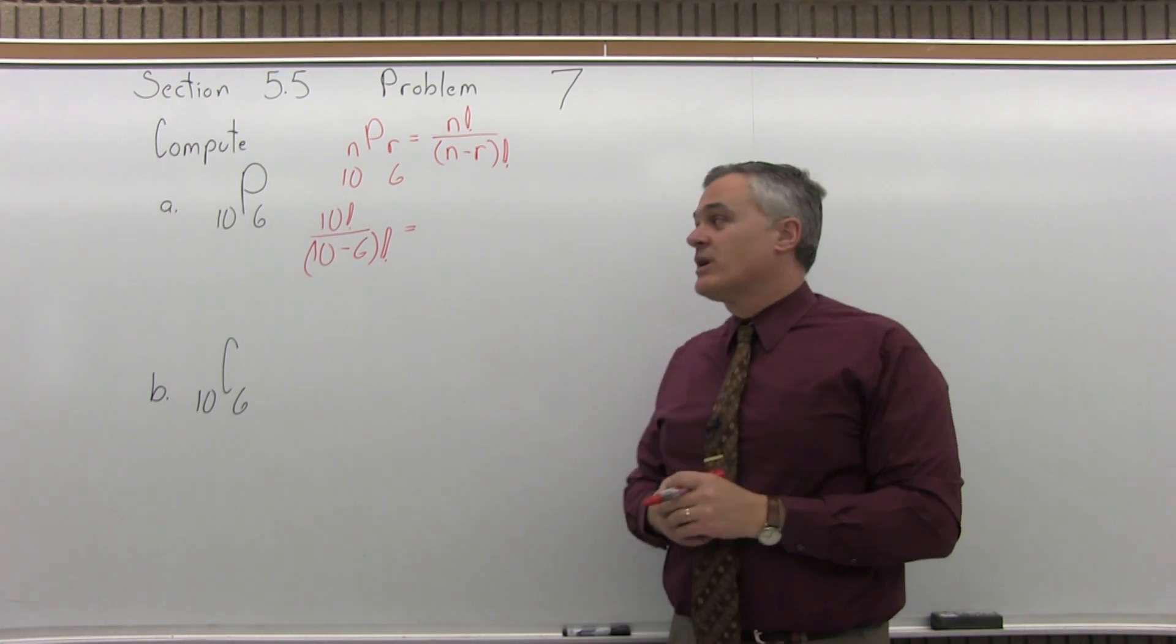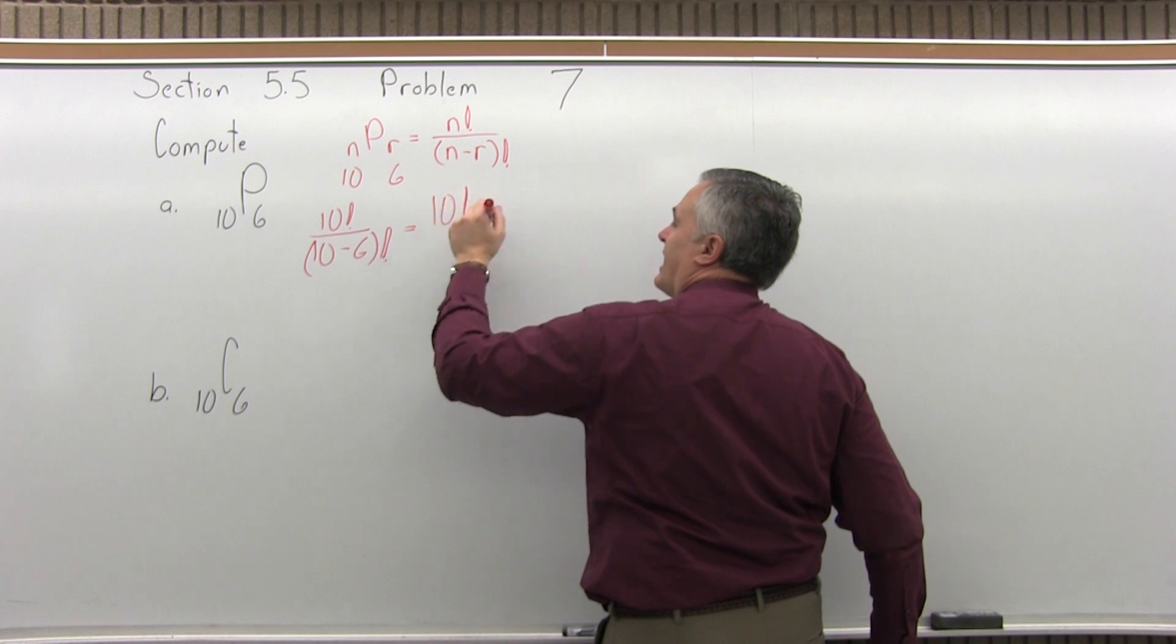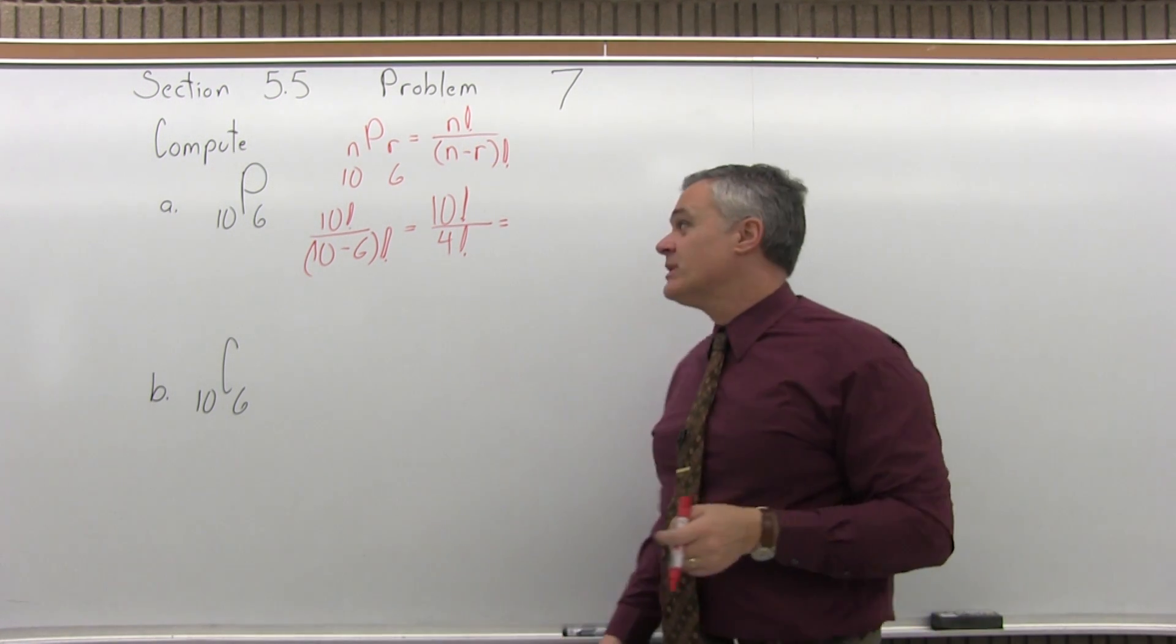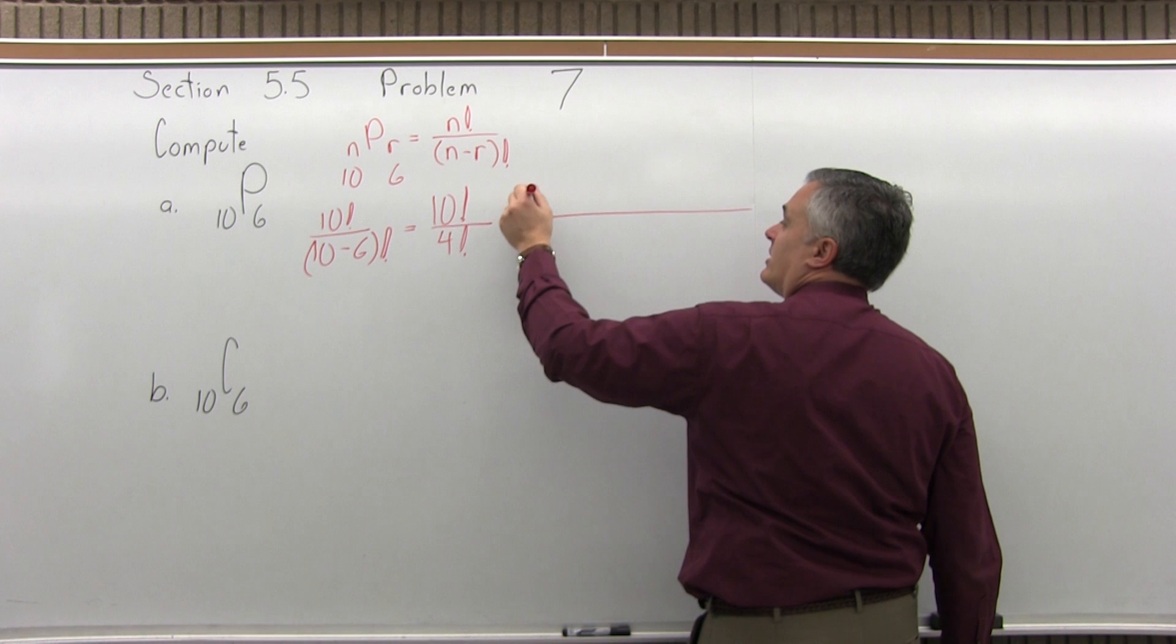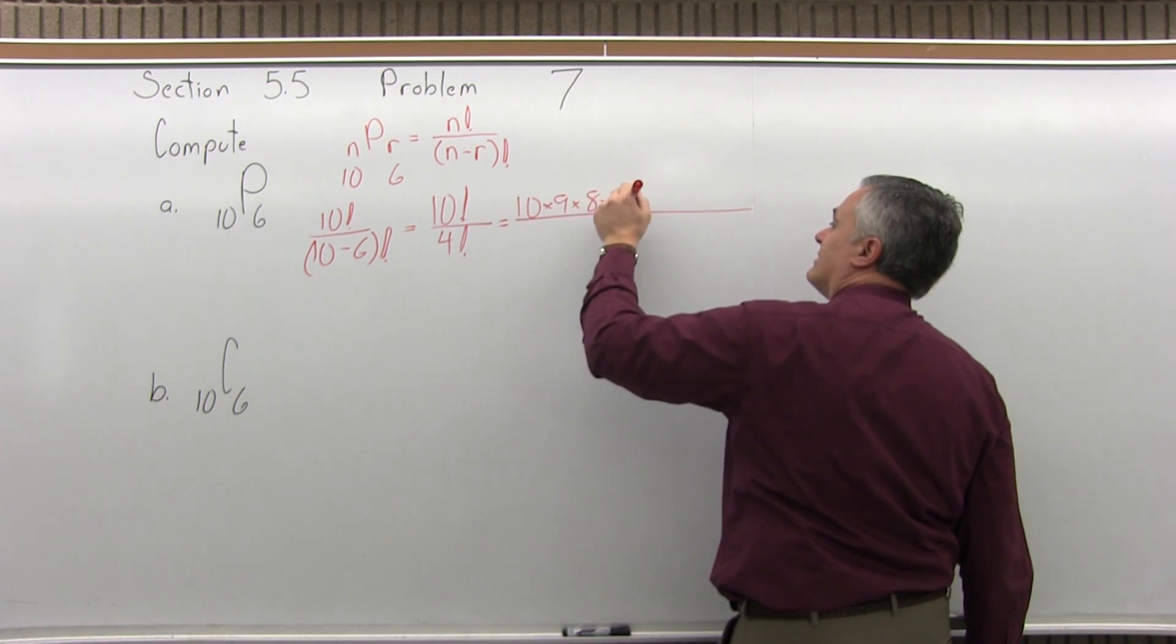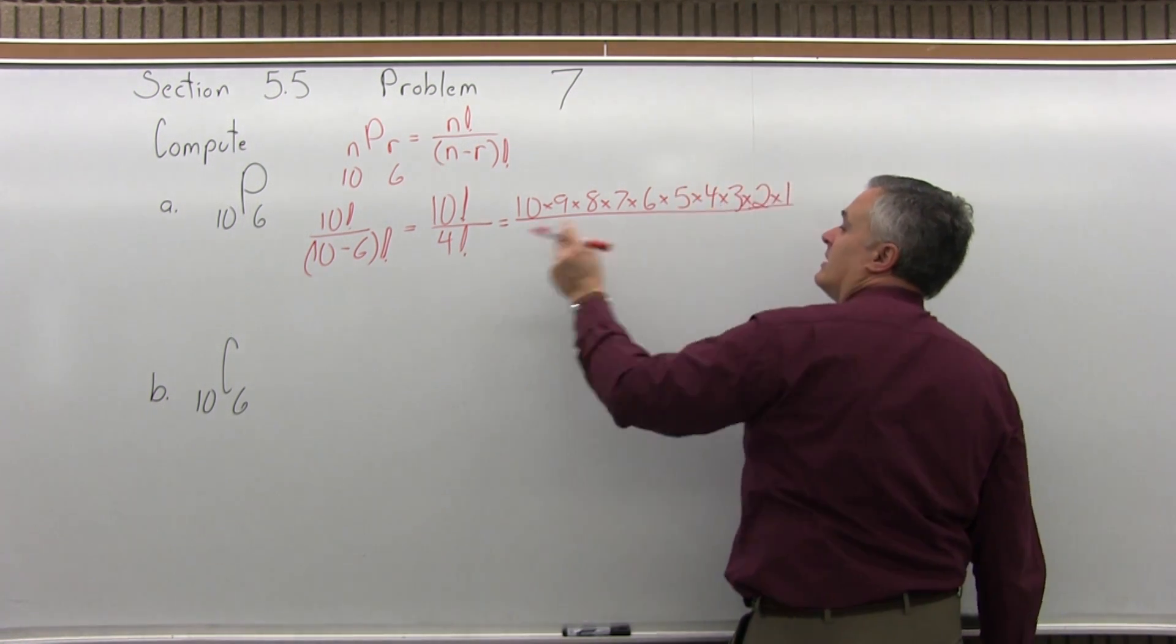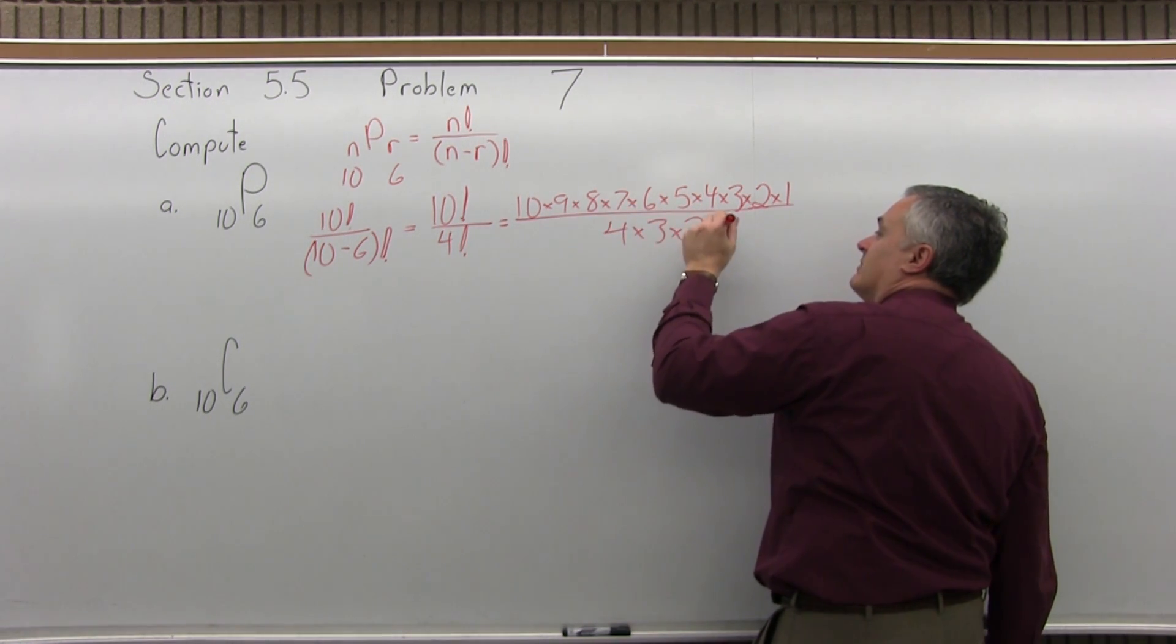Anytime you have parentheses, do your work in parentheses first. So you will have 10 factorial over 10 minus 6 is 4 factorial. So now you can do out the factorials. 10 factorial will be 10 times 9 times 8 times 7 times 6 times 5 times 4 times 3 times 2 times 1. 4 factorial will be 4 times 3 times 2 times 1.